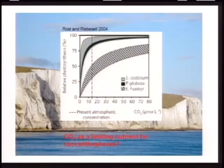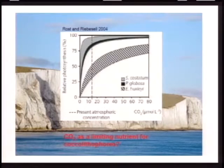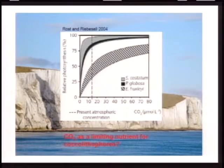Some data presented by Ulf Rebezel show that when CO2 is raised in culture conditions with three different species — two diatoms and E. huxleyi — if you focus on E. huxleyi with the dashed lines, you can see that as you raise CO2 above present atmospheric levels, its relative photosynthetic ability actually increases. It's almost as if that common coccolithophore, Emiliana huxleyi — the coccolith weed of the modern ocean — is doing much better under those higher CO2 conditions in terms of its photosynthesis.